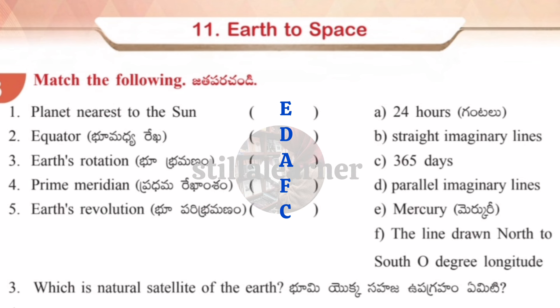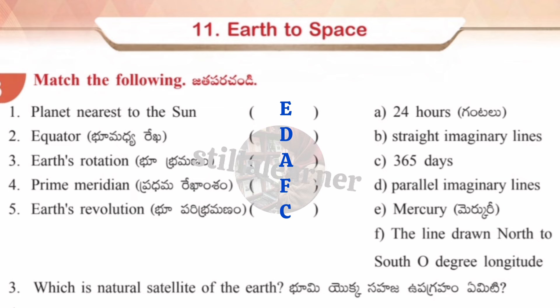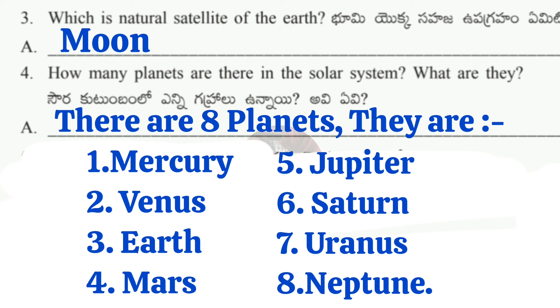Match the following in Worksheet 7: Planet nearest to the sun → E (Mercury). Equator → D (parallel imaginary lines). Earth's rotation → A (24 hours). Prime meridian → F (lines drawn north to south, 0-degree longitudes). Earth's revolution → C (365 days). Answers: E, D, A, F, C.